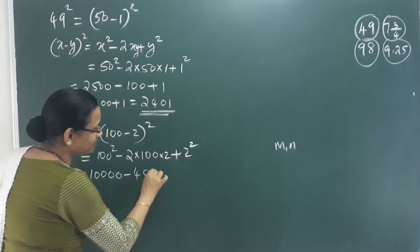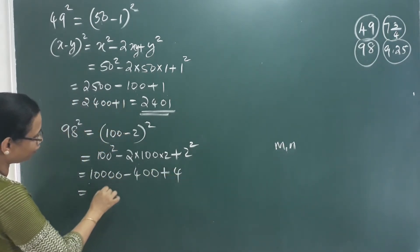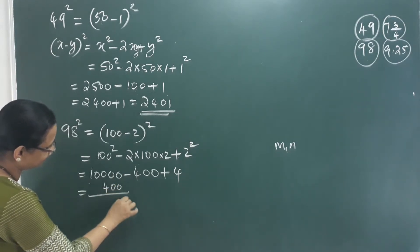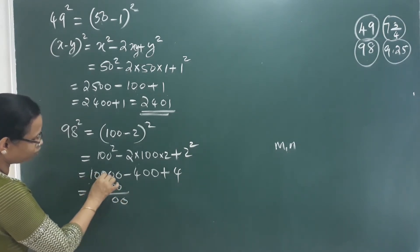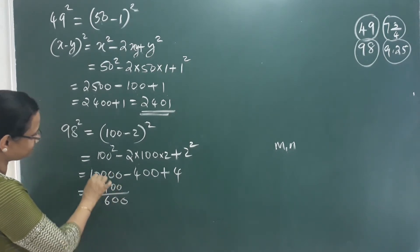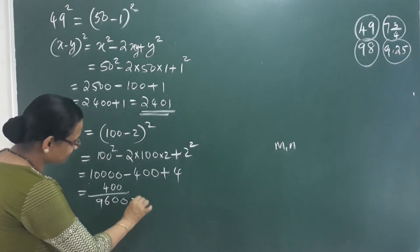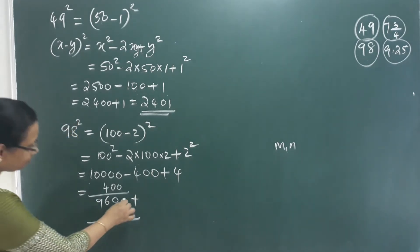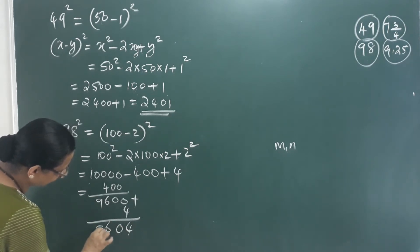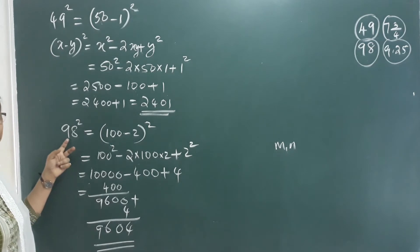So 98 squared equals 10000 minus 400 plus 4, which equals 9604. That is 98 squared.